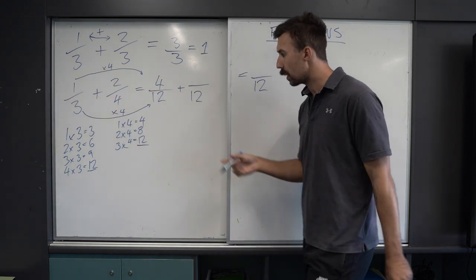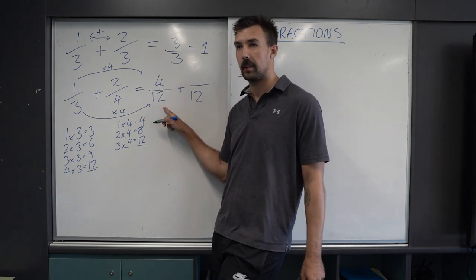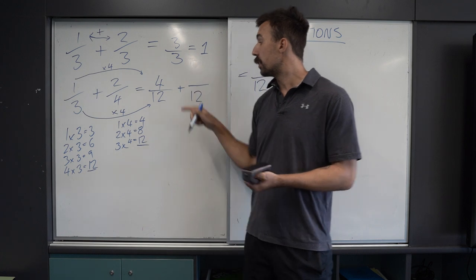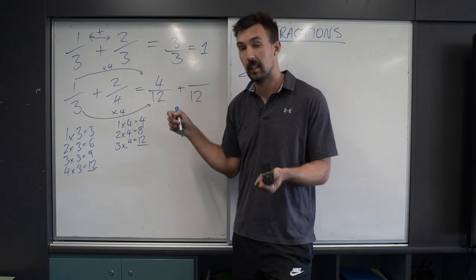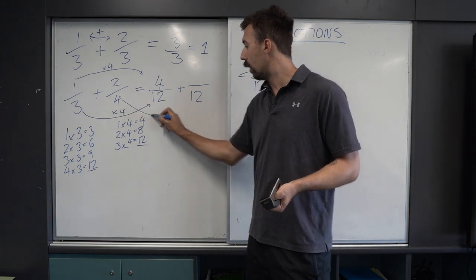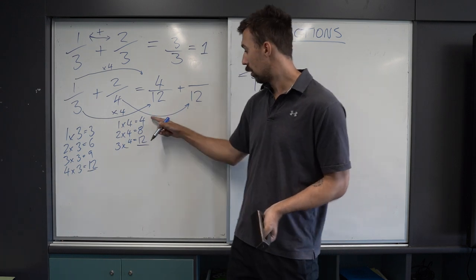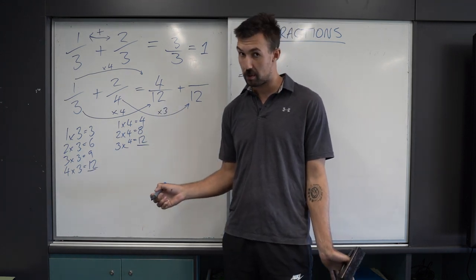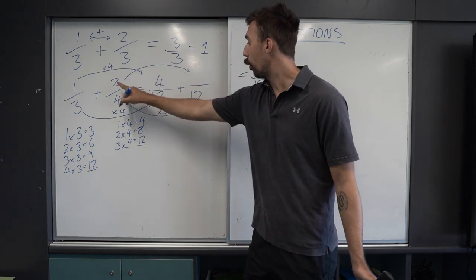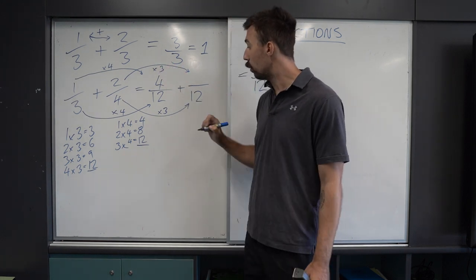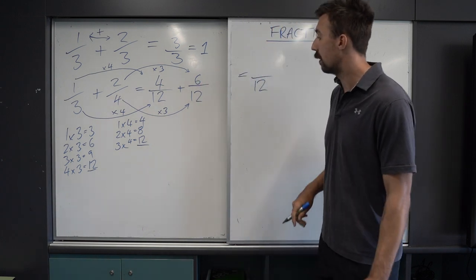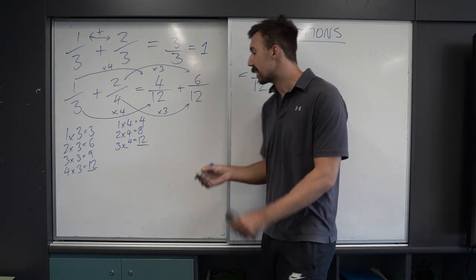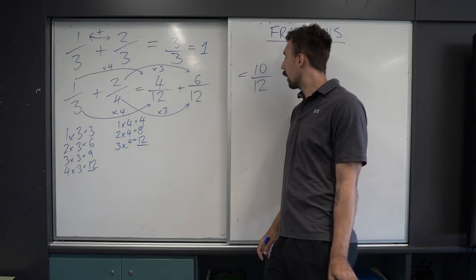It's the same ratio. So if you were asked to simplify 4 over 12, the answer would be 1 over 3. But this time we're making it bigger so we can add the fractions together. What is 4 multiplied by to get 12? The answer is 3. So 4 times 3 equals 12. Whatever you do to the bottom, you do to the top: 2 times 3 equals 6. Now we add them together: 4 plus 6 equals 10. We have 10 over 12.